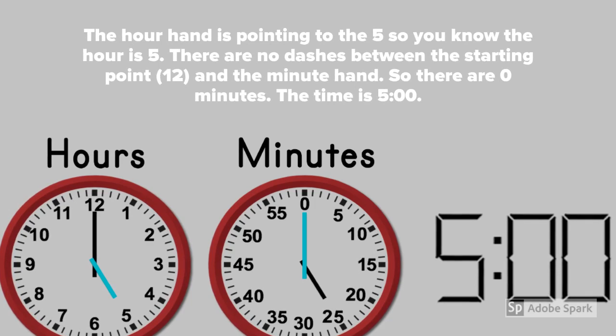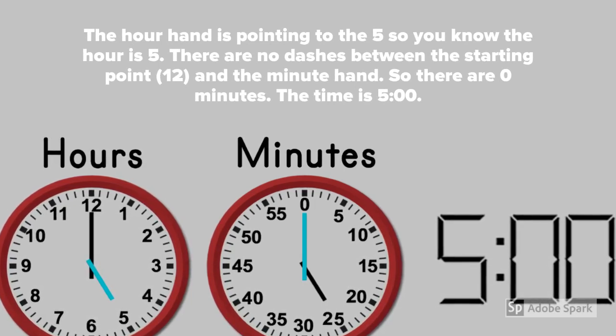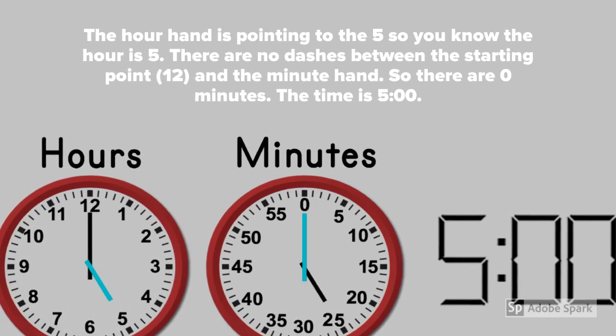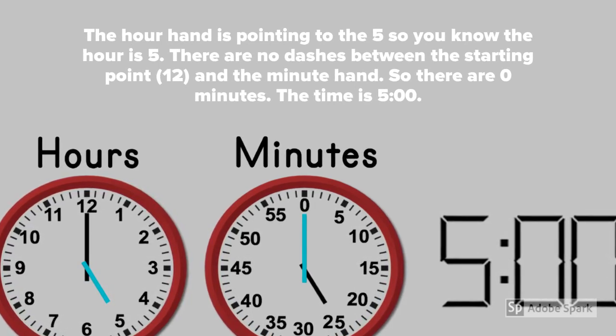The hour hand is pointing to the five, so you know the hour is five. There are no dashes between the starting point twelve and the minute hand, so there are zero minutes. The time is five o'clock.